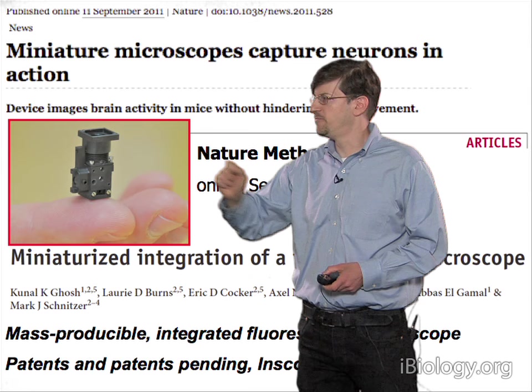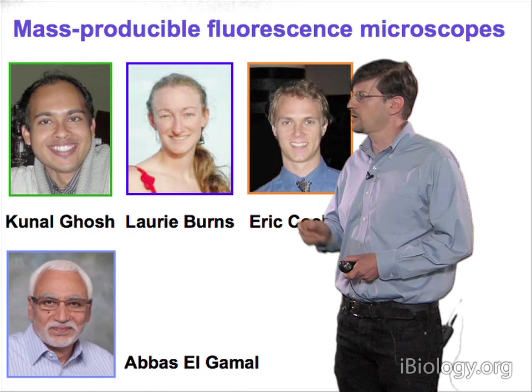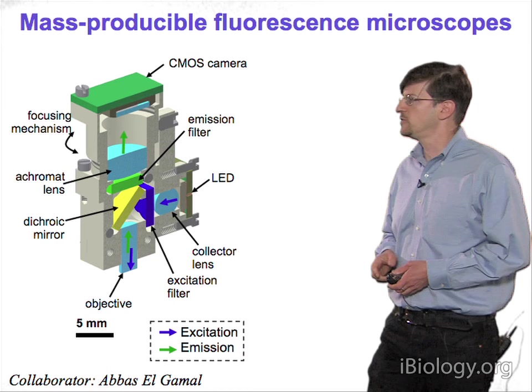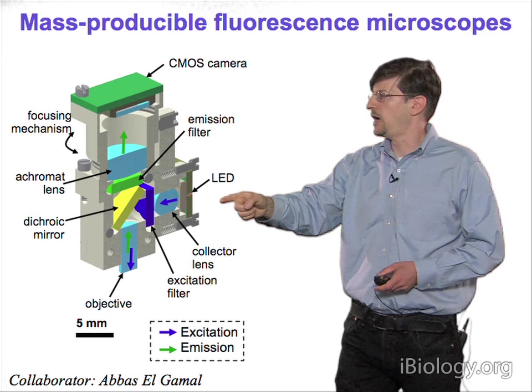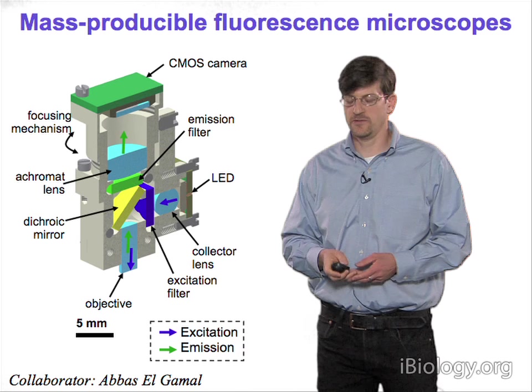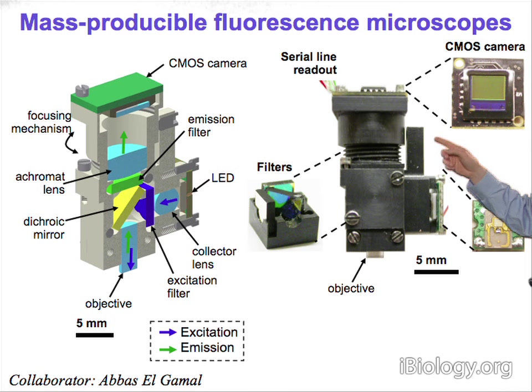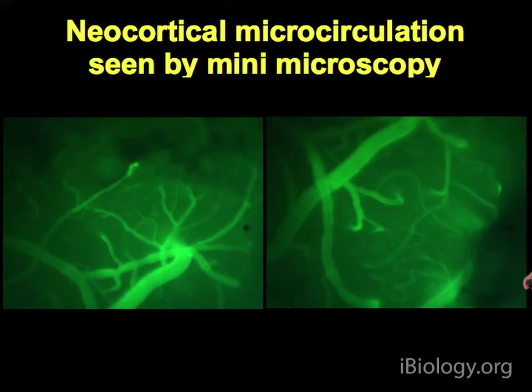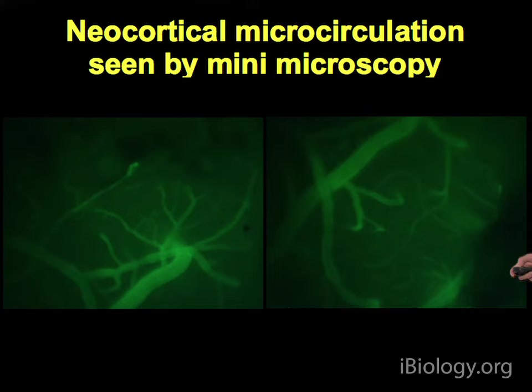Here you can see one of the resulting integrated microscopes on the tip of my finger. This work was spearheaded by Kunal Ghosh, Laurie Burns, and Eric Cocker. A cut-away view shows the interior: a CMOS semiconductor camera for image acquisition, a tiny LED for illumination, and a small dichroic and filter set for fluorescence imaging. Example videos show neocortical microcirculation as acquired by this mini-microscope — you can see individual erythrocytes passing through capillaries, with image quality indistinguishable from a conventional setup.